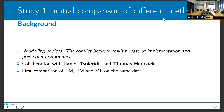The first study I'm going to talk about is work I did with Palos Solerides and Thomas Hancock in Leeds, which is the first comparison of choice modeling, machine learning, and mathematical psychology models on the same data. There have been many papers that have compared two of these three on the same dataset, but not all three together.